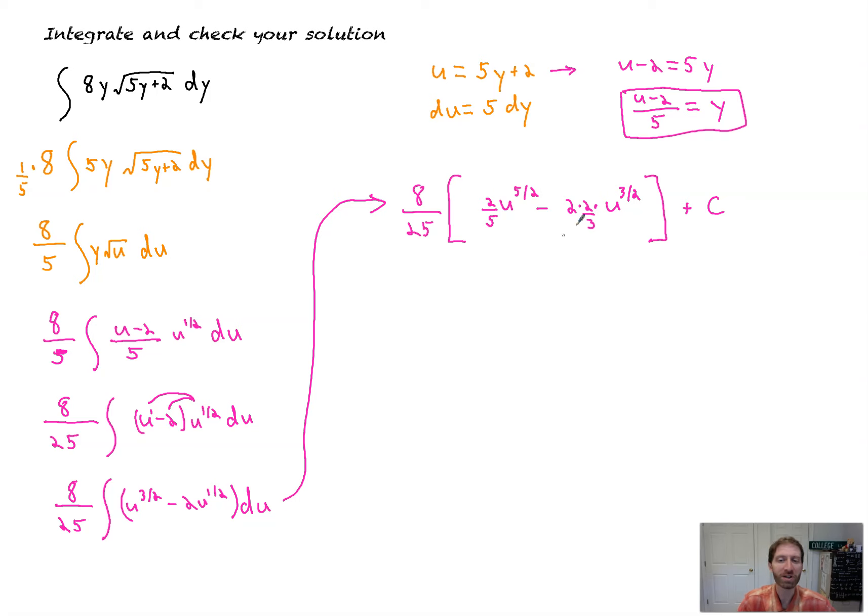Now, from here, we're just going to sub everything back in, but be careful. You've got this 8 over 25 to contend with. So, 8 over 25 times, and you'll have 2 fifths, u is 5y plus 2. All right, we'll deal. Leave it in the fractional exponent though, right? 5 halves. Minus. Now, we'll have 8 over 25. Again, we're distributing that to each. Times this is 2 times 2 is 4 thirds. We'll simplify shortly. Yes, we will. Times 5y plus 2, all raised to the 3 halves. Plus C.